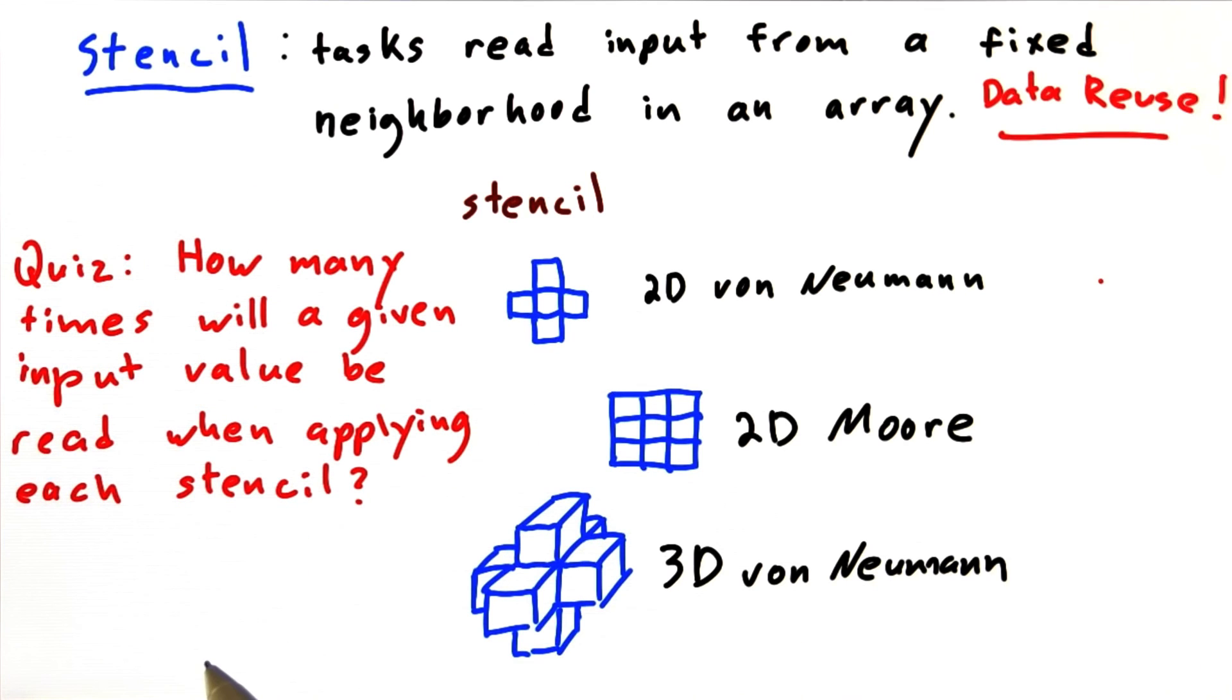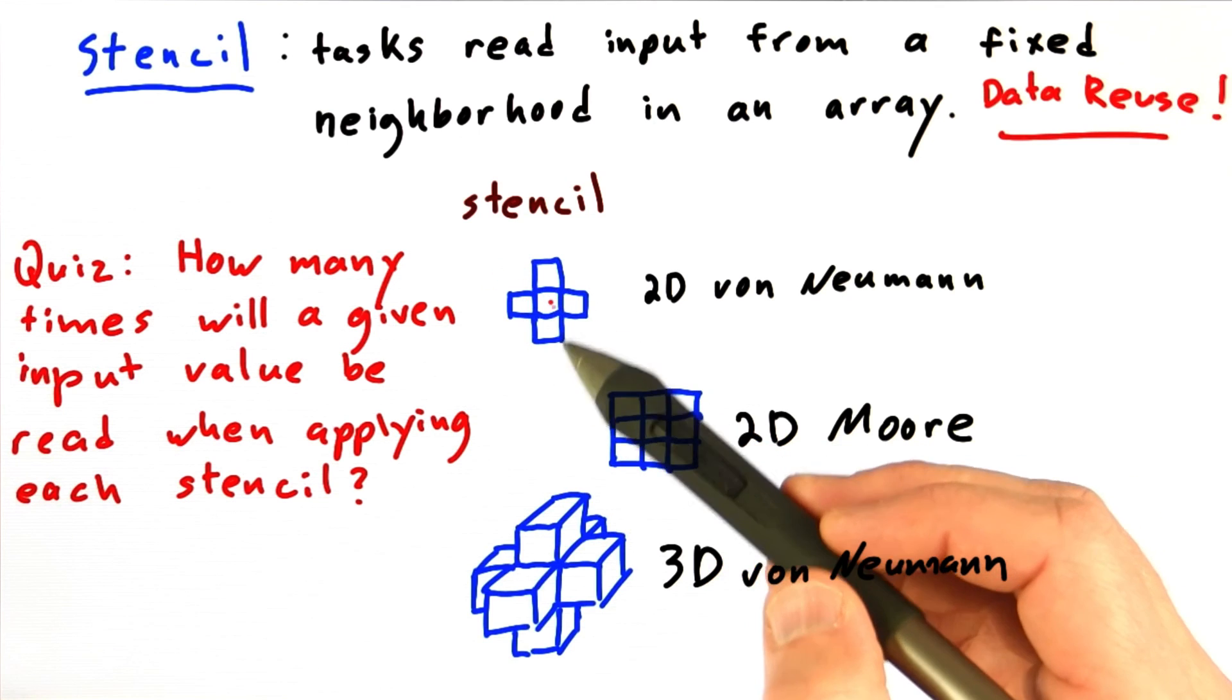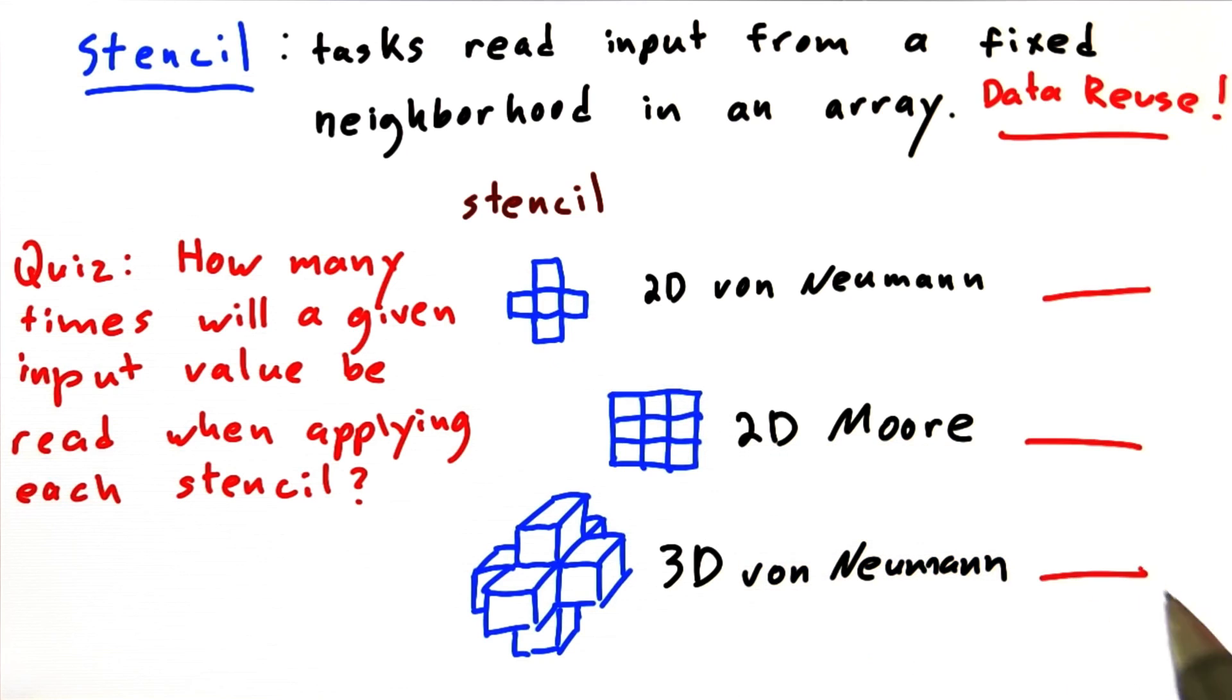Speaking of data reuse, here's a quick quiz. Can you figure out how many times a given input element in the array will be read when applying each of these stencils?